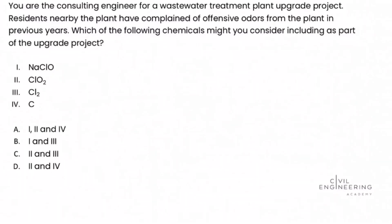Welcome back to Civil Engineering Academy. This is Matt, and today we work a problem from the water resources breadth section of the Civil PE exam. You are the consulting engineer for a wastewater treatment plant upgrade project. Residents nearby the plant have complained of offensive odors in previous years. Which of the following chemicals might you consider including as part of the upgrade project? We're given four chemical compounds listed.